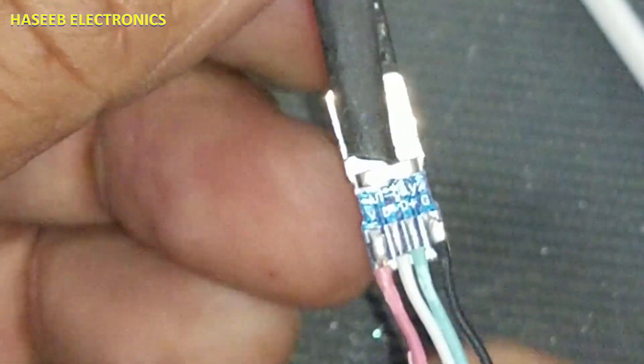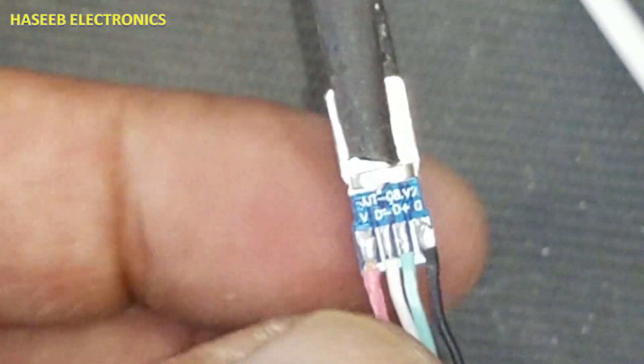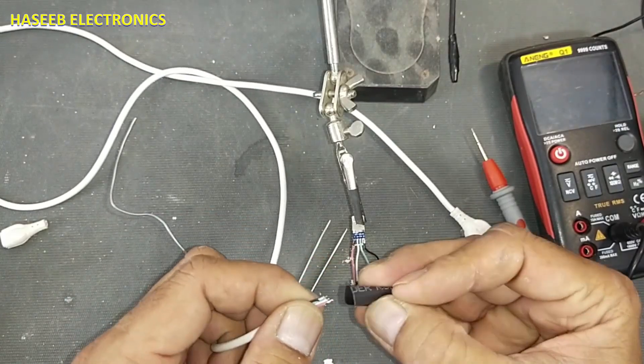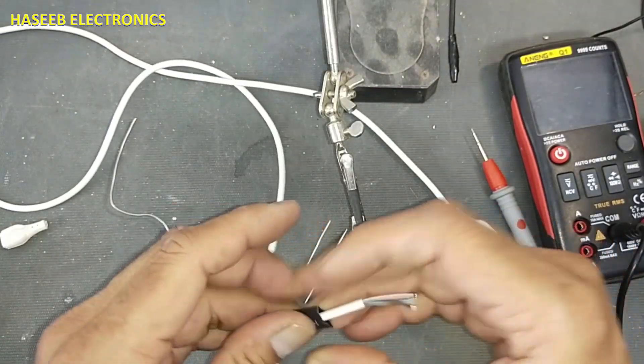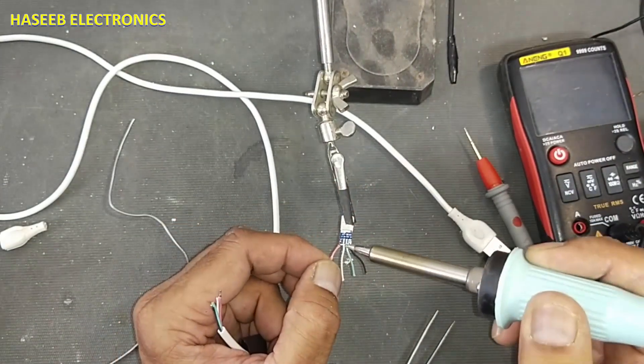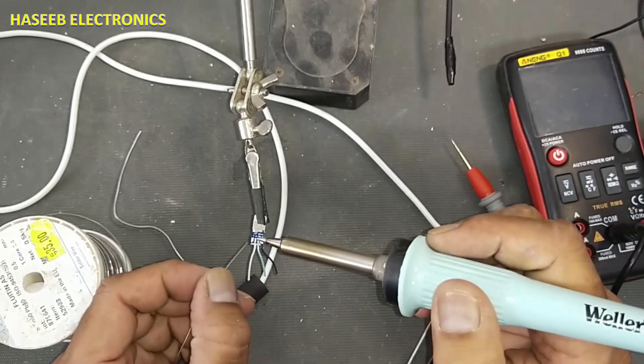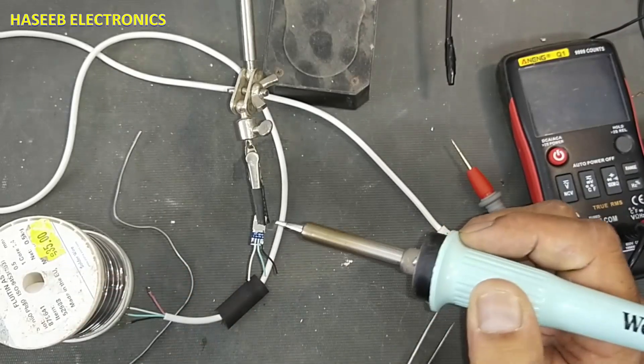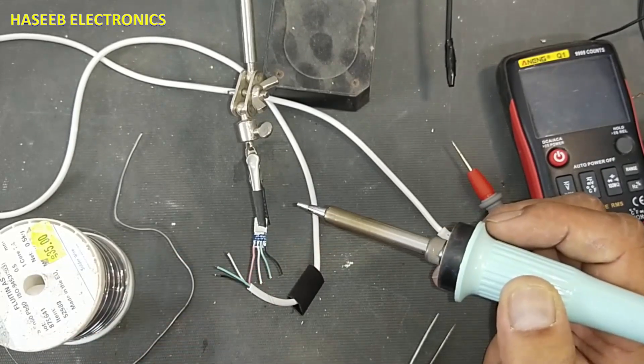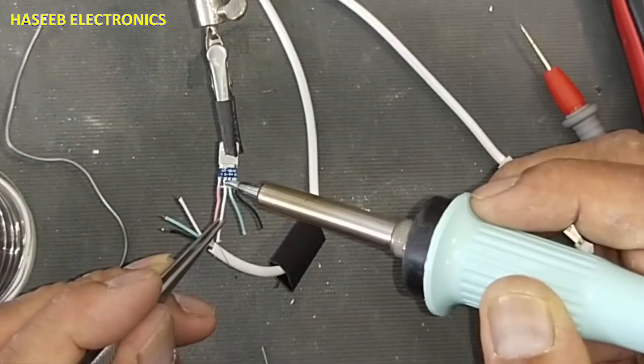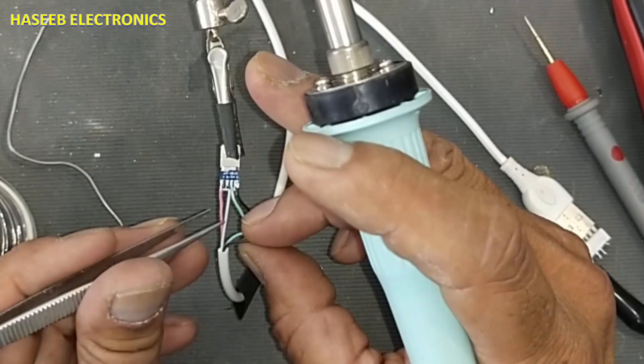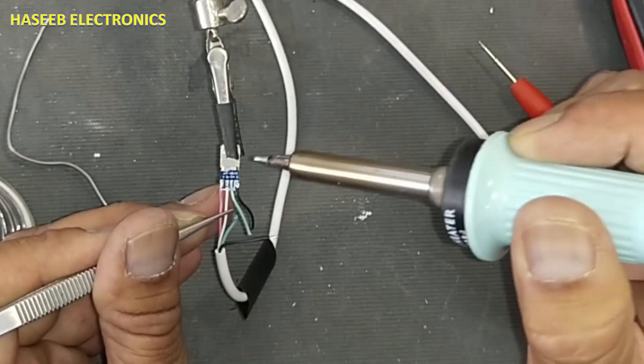Now I am holding this charging base in the helping hand. Now I will insert this heat shrink sleeve here. Now I will remove one wire at one time. Just refresh the solder. When you are soldering, do very careful soldering so that there should be no bridging between the connections. The solder drop should not make short circuit between the two pins.